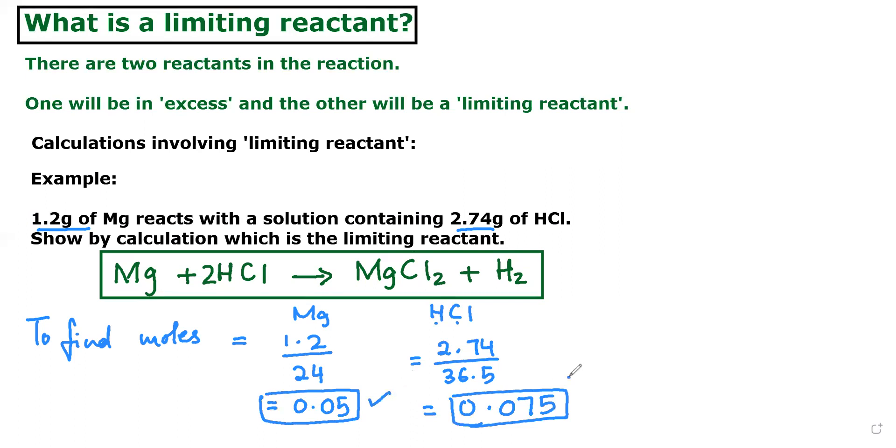Okay, now how to find the limiting reactant. Now look at the coefficient. Here you have nothing means 1, right? So for magnesium total, how many moles you have? You have 0.05. For hydrochloric acid, coefficient is 2. So what you are going to do? You are going to divide it by 2. Here it is 1, so you divide it by 1, it will give you the same. So when you divide it, what do you get? Okay, now right here.